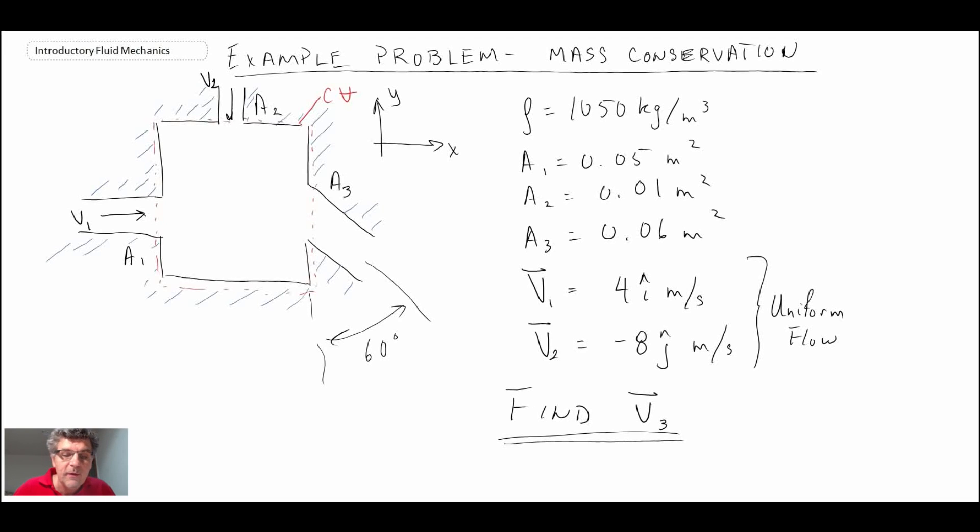So what we're going to do is go through applying the conservation of mass equation. Another thing to note here is the density has been specified, so that means we have a case of incompressible flow and it is steady. But if it's incompressible, the time rate of change term drops out of the continuity equation anyways. Let's work through it and work on finding V3.